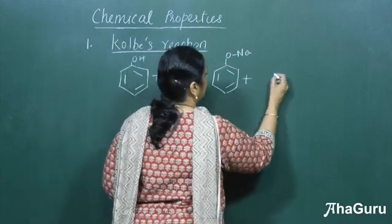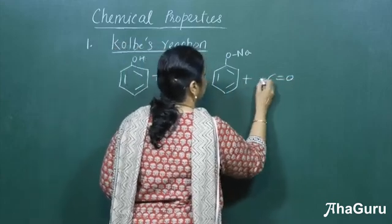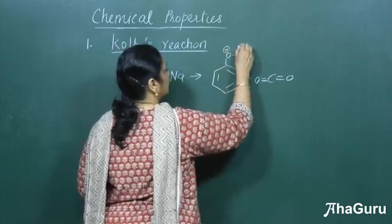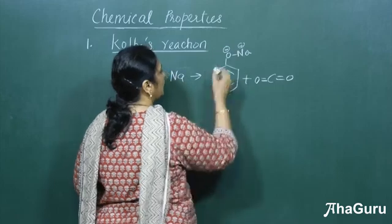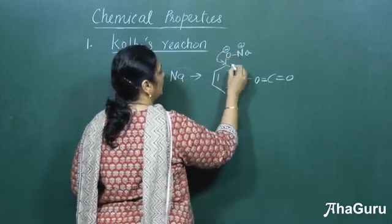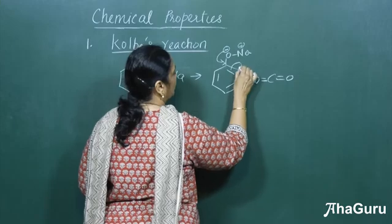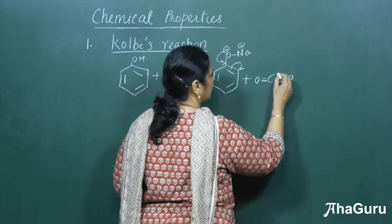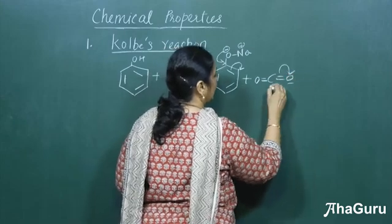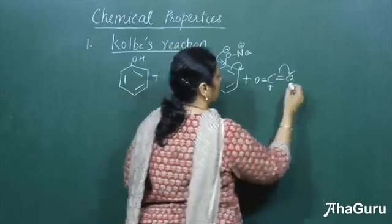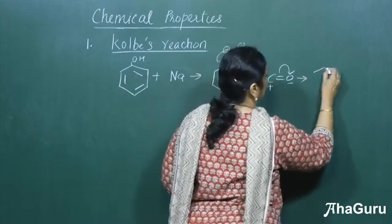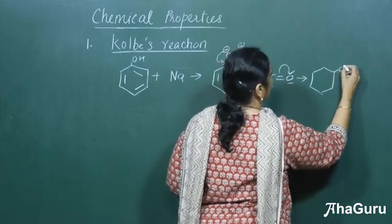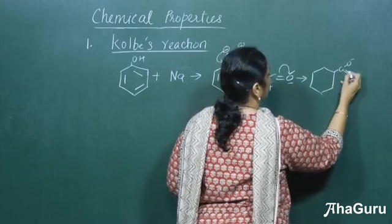We will treat the sodium phenoxide with carbon dioxide. This is the main compound. We divide carbon dioxide into minus and plus parts — the minus will move here and the double bond electron will move accordingly. So carbon dioxide is divided into a minus end and a plus end.